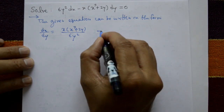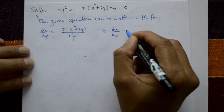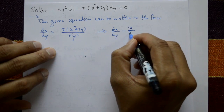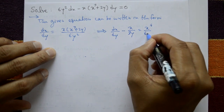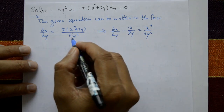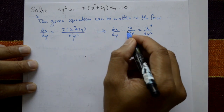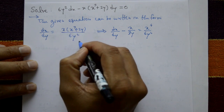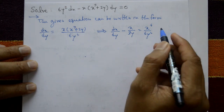This equation becomes dx by dy minus x upon 3y is equal to x raised to 4 by 6y squared. Here 2y by 6y squared simplifies: 1y is cancelled, so the left-hand side term is minus x upon 3y, and x raised to 4 by 6y squared remains on the right-hand side.